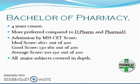Now let us talk about the most popular course in pharmacy, that is the Bachelor of Pharmacy. It is more preferred compared to D.Pharm or PharmD. It is a four-year course after HSE, and admission is by CAT scores. The ideal score to get into one of the best colleges would be 160 plus out of 200. Anything between 130 to 160 would be good enough, and 100 to 130 would be a basic average score to get into a college in Mumbai. All the major subjects are covered in depth as already discussed.